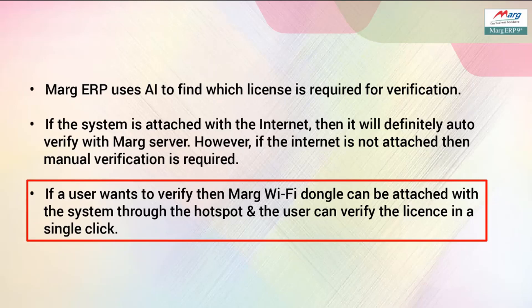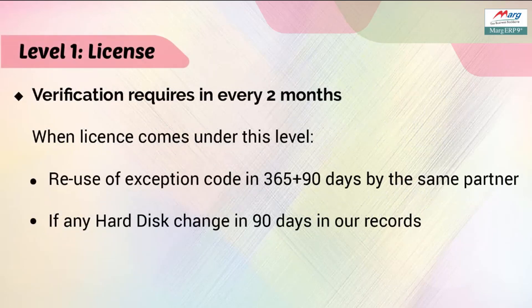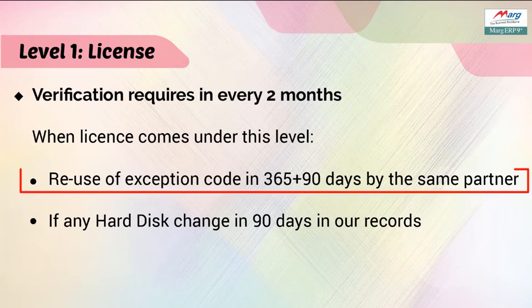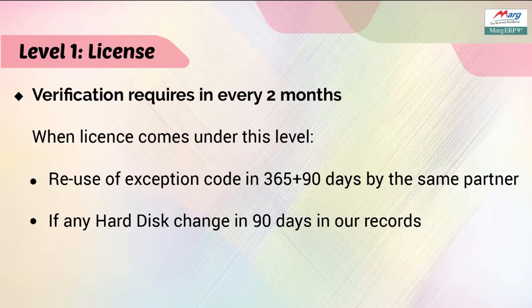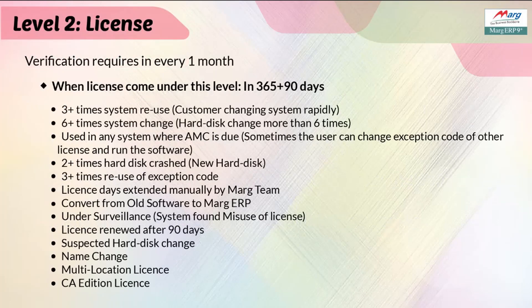There are a few guidelines for license verification which are necessary to follow, and these guidelines are divided into various levels. The first level is: if a partner uses the exception code repeatedly for 365 plus 90 days, then that license needs to be verified every two months. Also, if the hard disk of the system in which the license is registered has changed within 90 days, then the license also needs to be verified every two months.